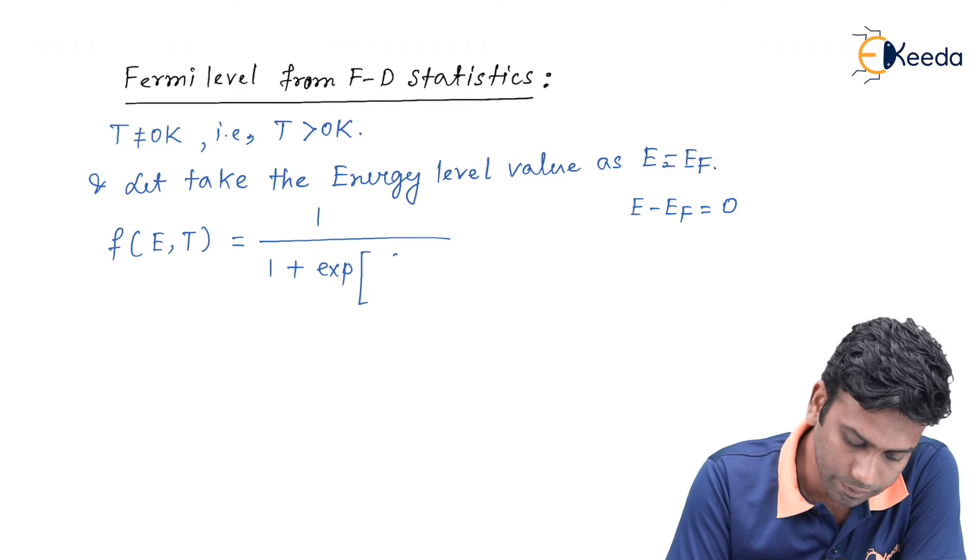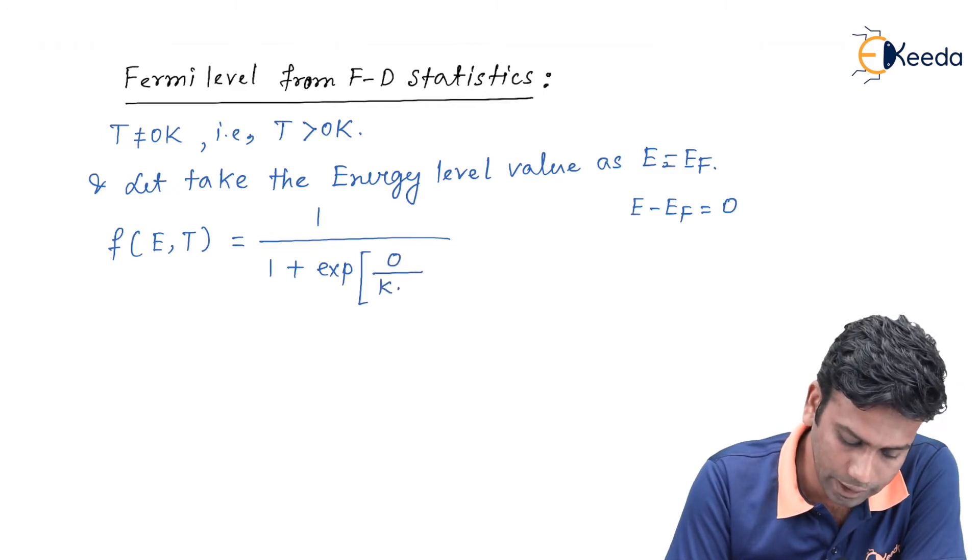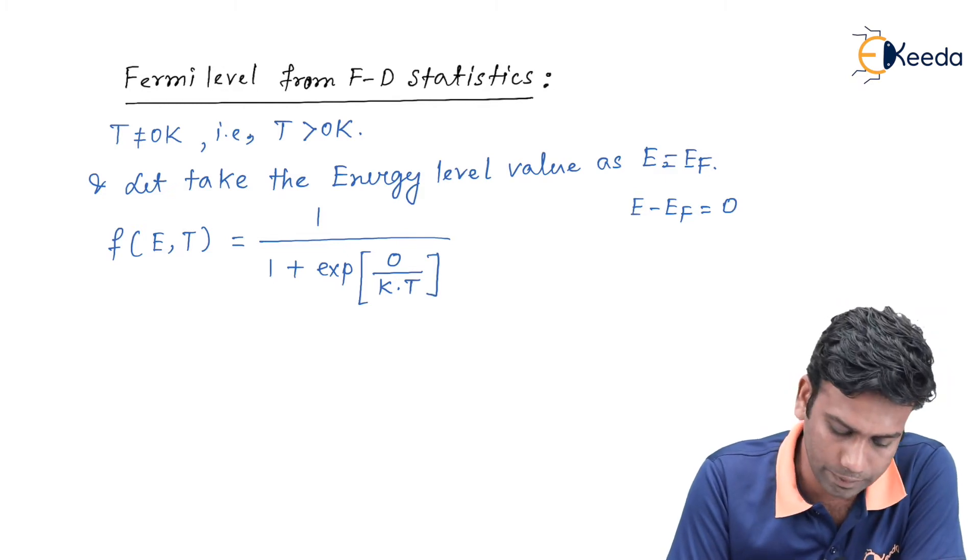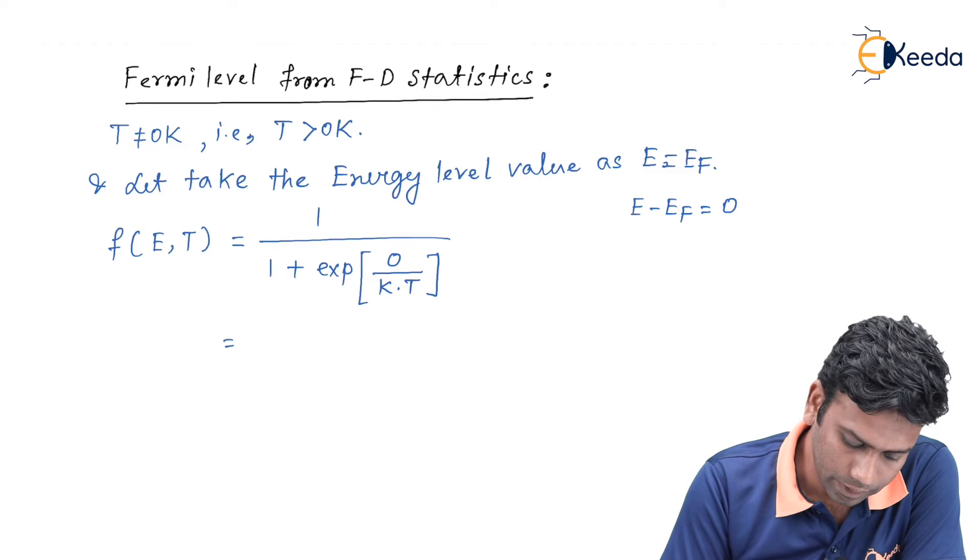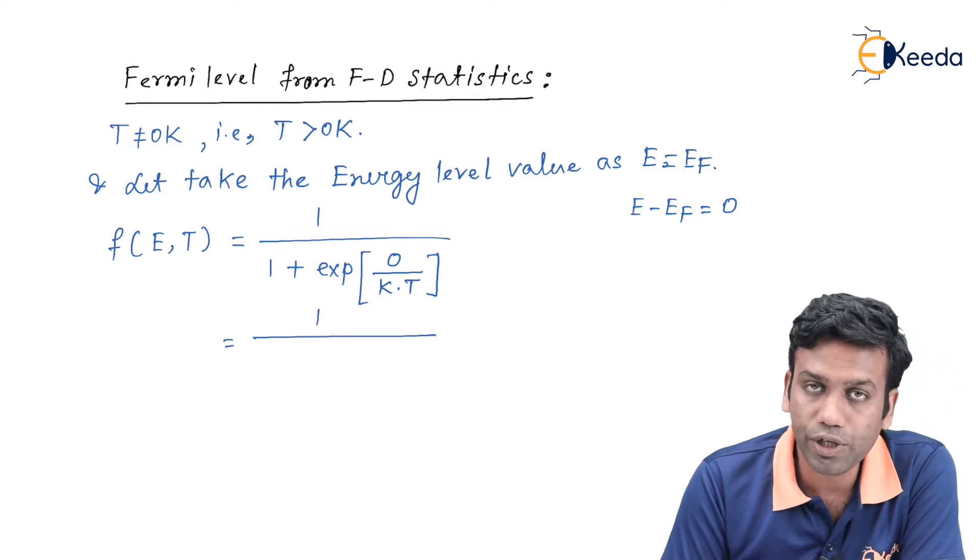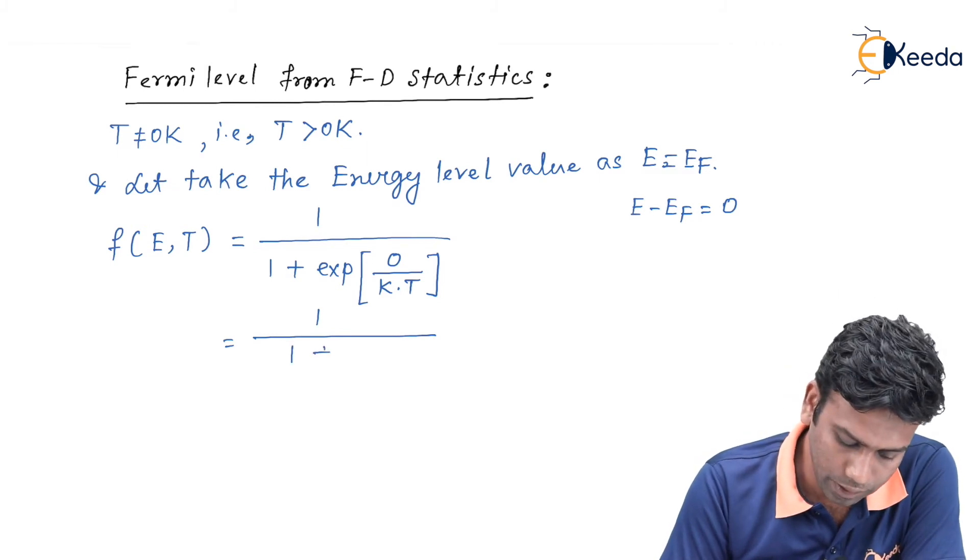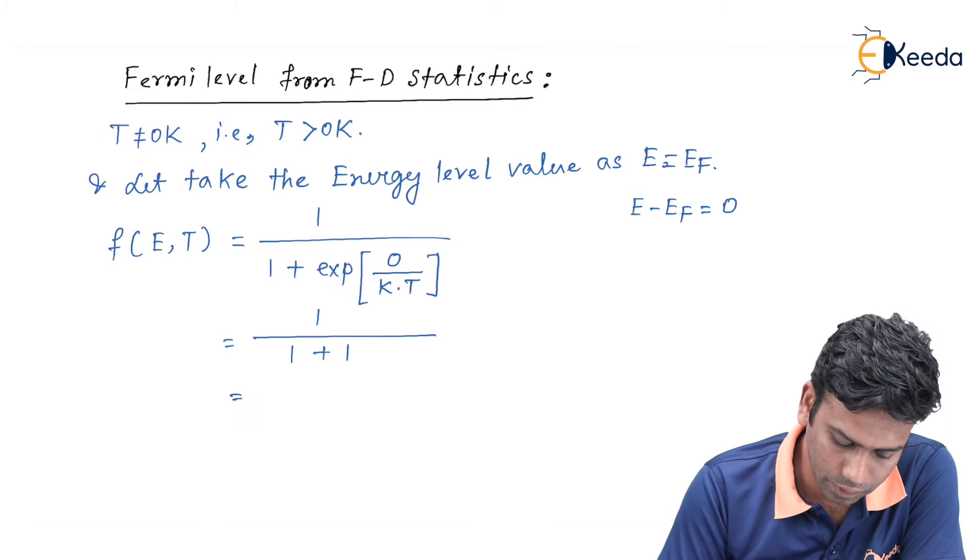We can write it as 0 divided by k into T, where k is the Boltzmann constant. This is further written as exponential to the power 0 is nothing but 1. So it will be 1 plus 1, and ultimately we will get half.